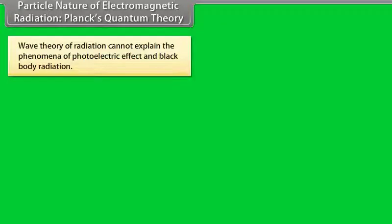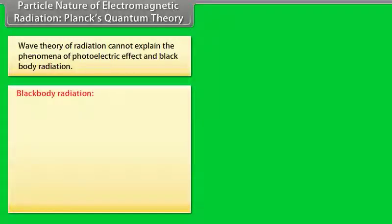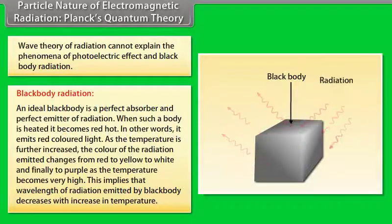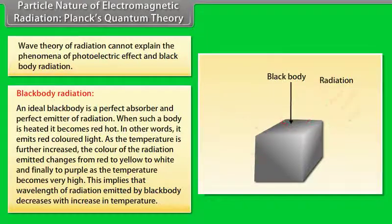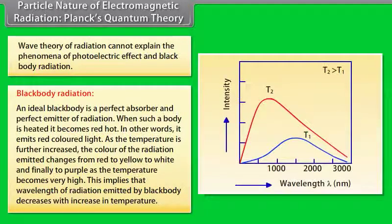Particle nature of electromagnetic radiation — Planck's Quantum Theory: Wave theory cannot explain photoelectric effect and black body radiation. An ideal black body is a perfect absorber and emitter of radiation. When heated it emits red light, then yellow, white, and finally purple as temperature increases, meaning wavelength decreases with increasing temperature. At a given temperature, intensity increases with decreasing wavelength up to a maximum, then decreases further.